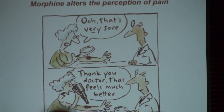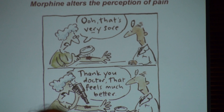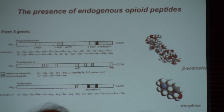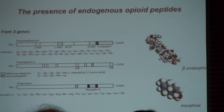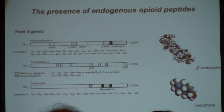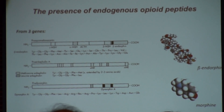It changes the way you react to your surroundings. And this is how it works — a very quick lesson. Now, you might ask yourself: morphine comes from opium, which comes from a plant.